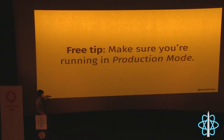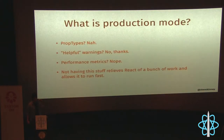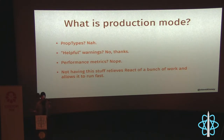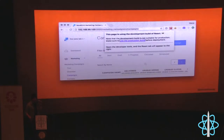Before you do anything, make sure you are in production mode. Production mode removes things from React: no prop types, no helpful warnings, no performance instrumentation, no console logs yelling at you about keys. Not doing those things is faster than doing them. You can tell via the React tools: if it's orange and scary, you're in development mode; if it's the regular black React logo, you're in production mode.